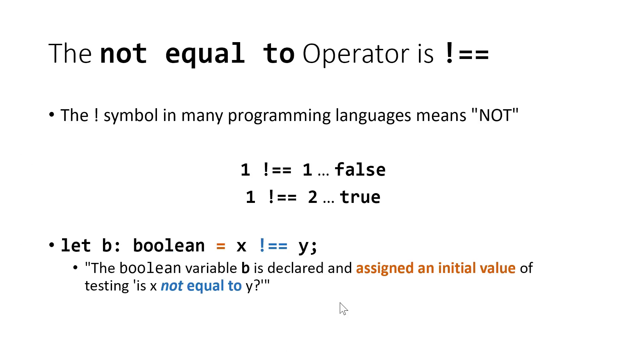The not equal to operator is the exclamation point followed by two equal symbols. The exclamation point symbol in many programming languages means not. So one is not equal to one, that's false because one is equal to one. One is not equal to two, that's true. Similarly, we could set up a Boolean variable b that's assigned the result of asking are two variables not equal to one another, and that's either going to be true or false. Those are the relational inequality operators.